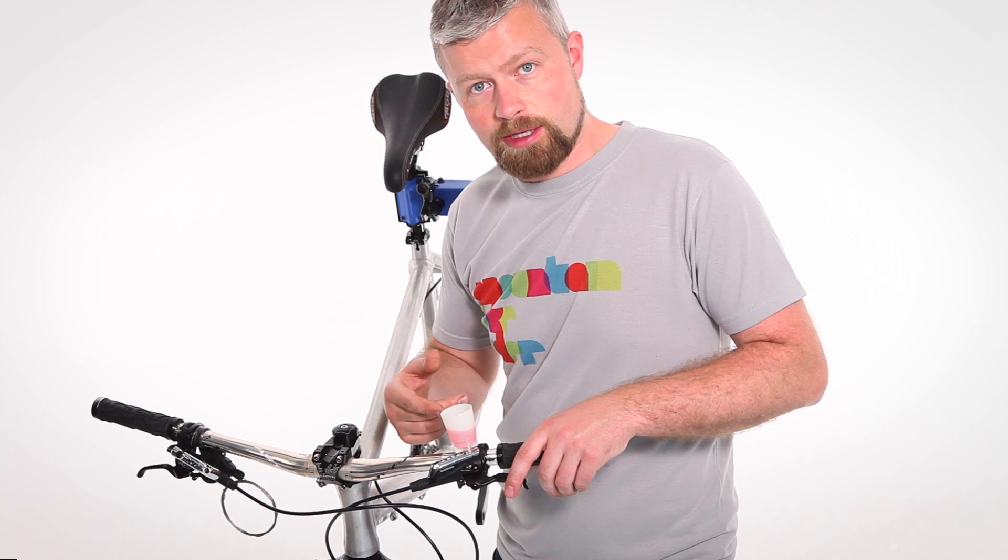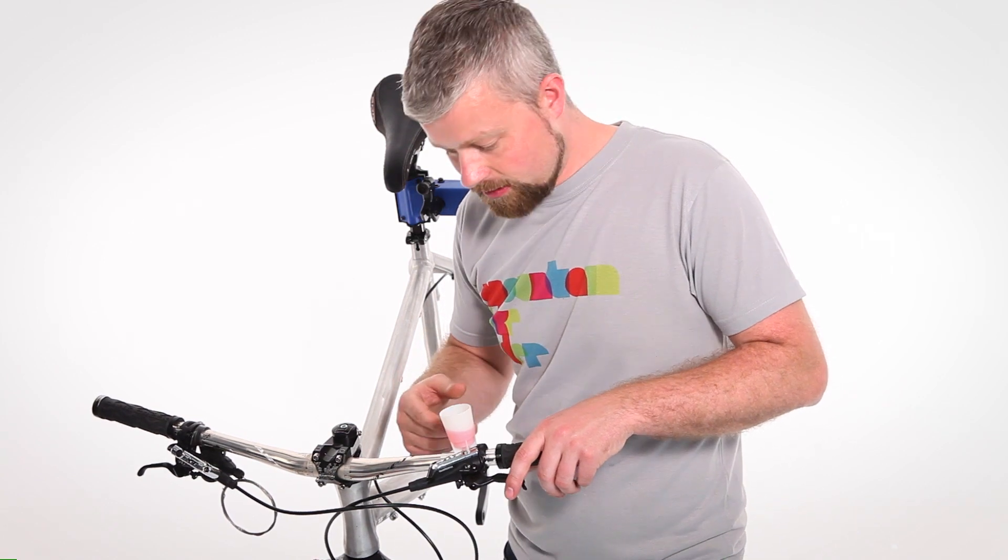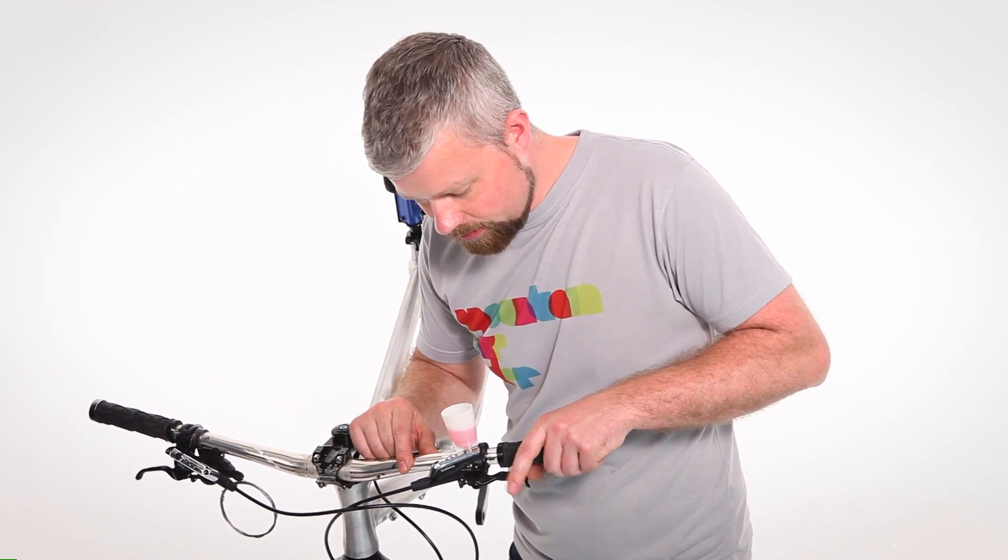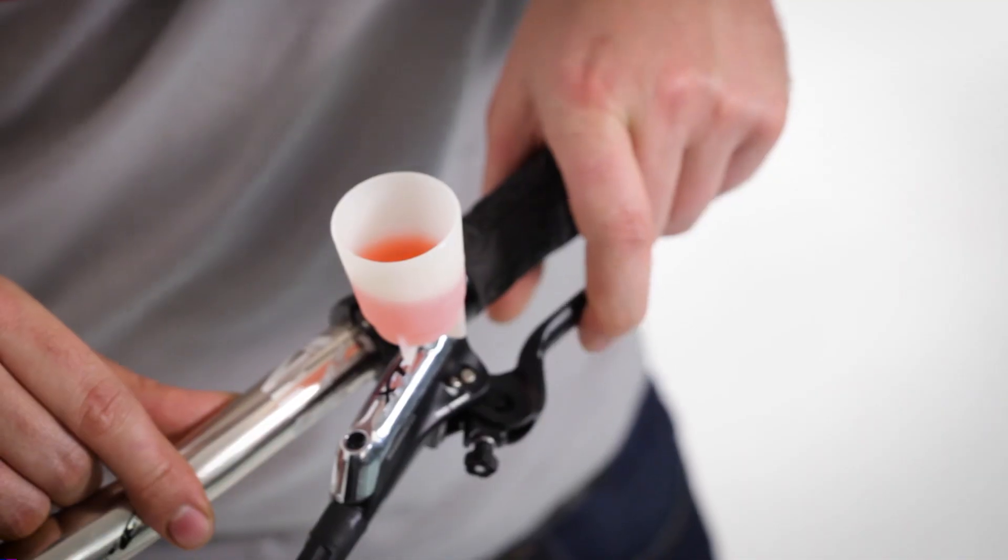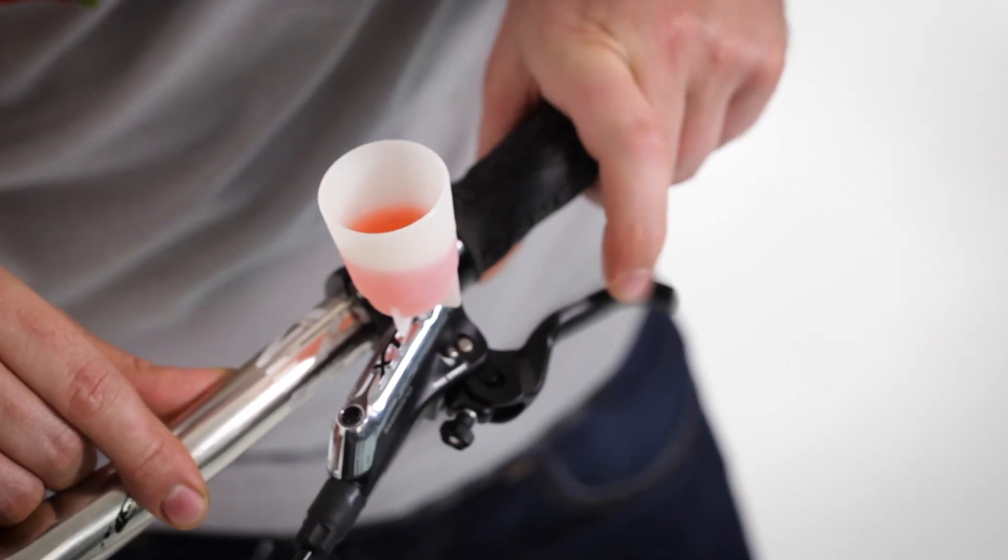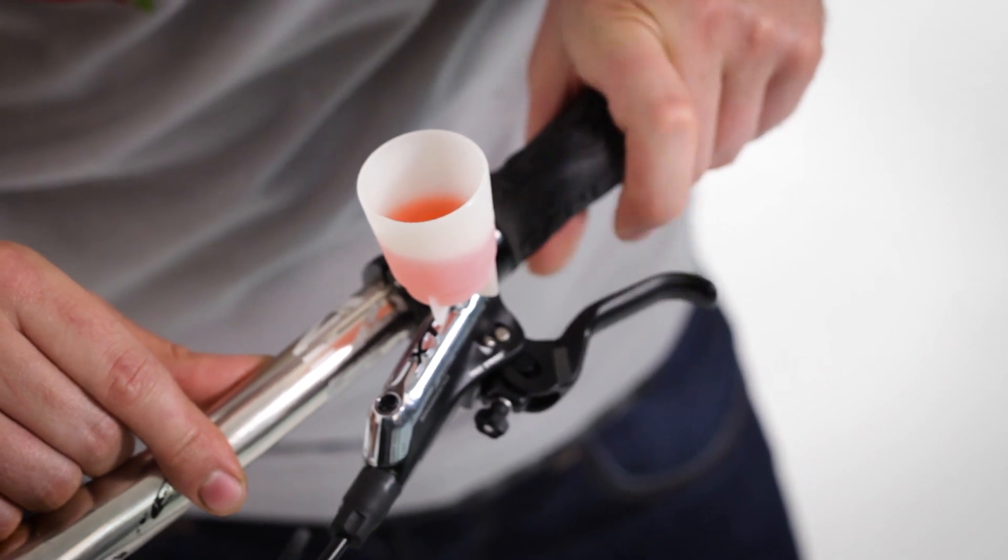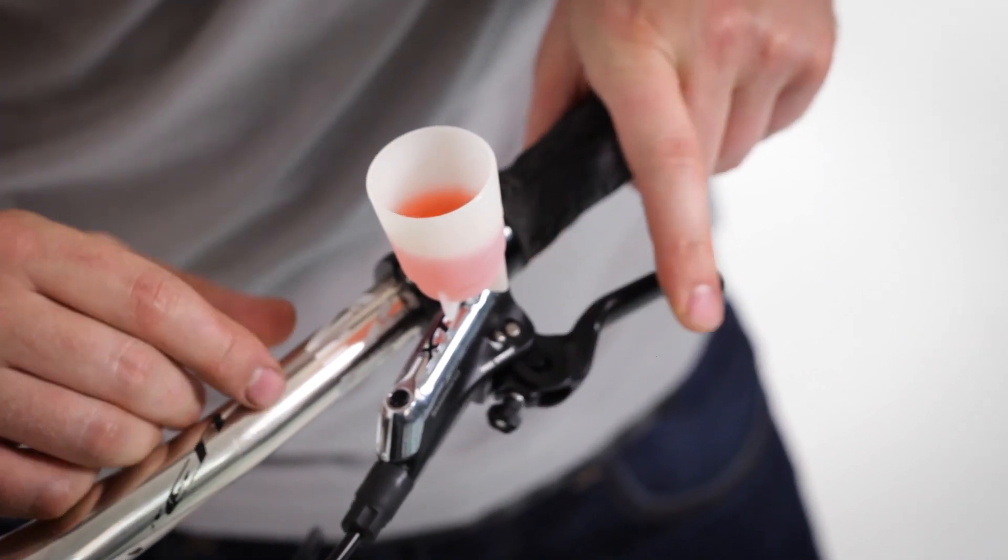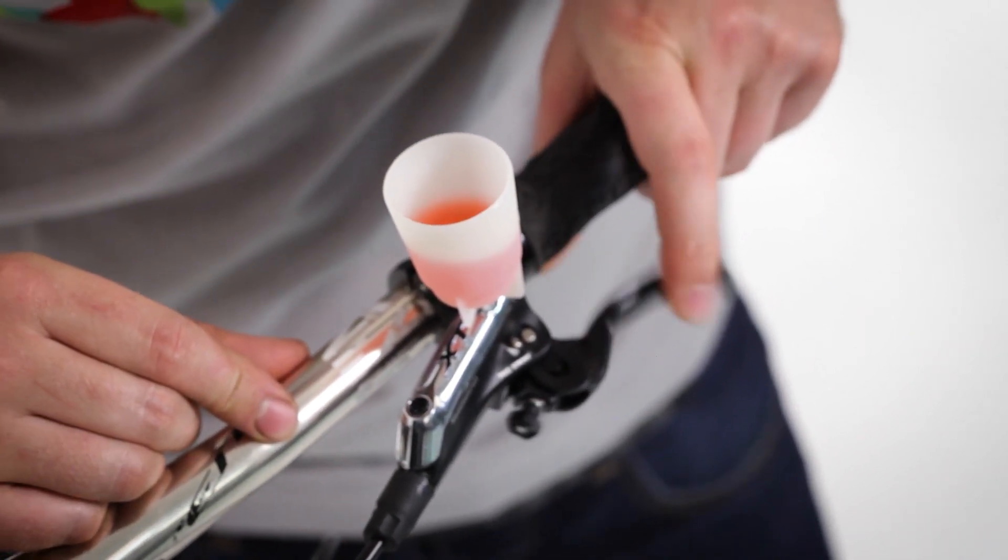Now at the lever, we're going to try and get as many bubbles out of here as we can. We're going to do that basically by just pulling the lever locked. As we pull it, we should see tiny little bubbles rise up through the fluid in the funnel.